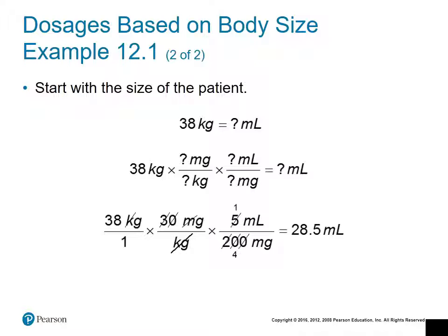You take the patient size and multiply it by the order. So: 38 kilograms multiplied by 30 milligrams per kilogram, then multiplied by the strength of the medication — 5 milliliters per 200 milligrams — placing milligrams in the denominator so they divide out, leaving us with milliliters. The result is 28.5 milliliters.